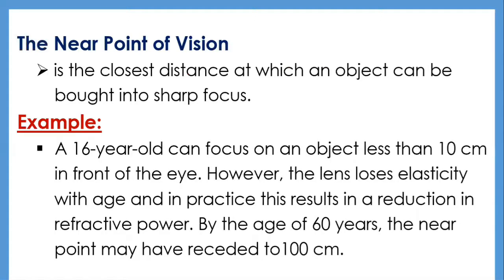The near point of vision is the closest distance at which an object can be brought into sharp focus. A 16-year-old can focus on an object less than 10 centimeters in front of the eye. However, the lens loses elasticity with age, resulting in a reduction in refractive power. By age 60, the near point may have receded to 100 centimeters — this is why older people often need reading glasses. By about age 50, the lens has only about two diopters of accommodation left, and afterwards it can be regarded as completely non-accommodating, a condition known as presbyopia.